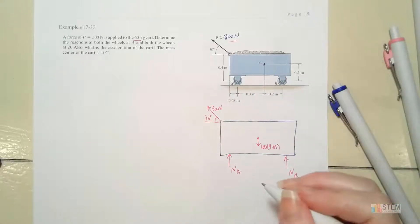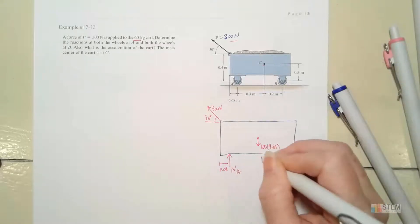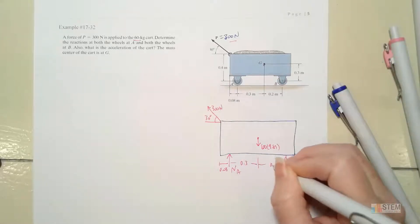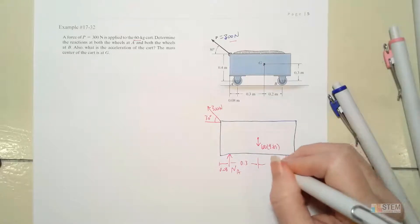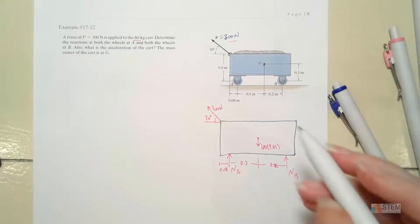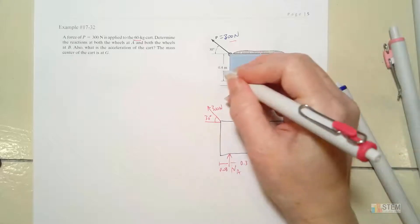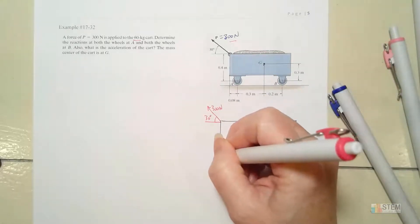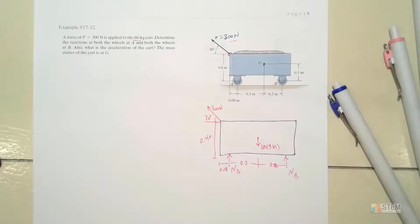Now let's go ahead and put our distances on here. This is 0.08 meters. Here to here is 0.3. And then here to here is 0.2. And then from A we've got 0.4 up to the force. So that puts all of our forces on there.